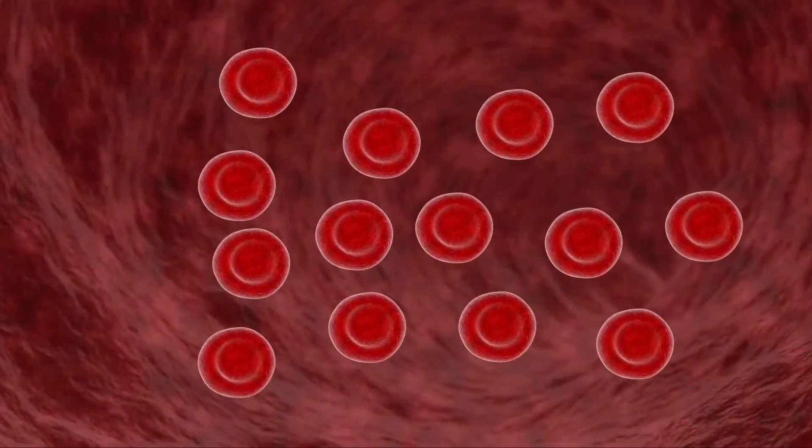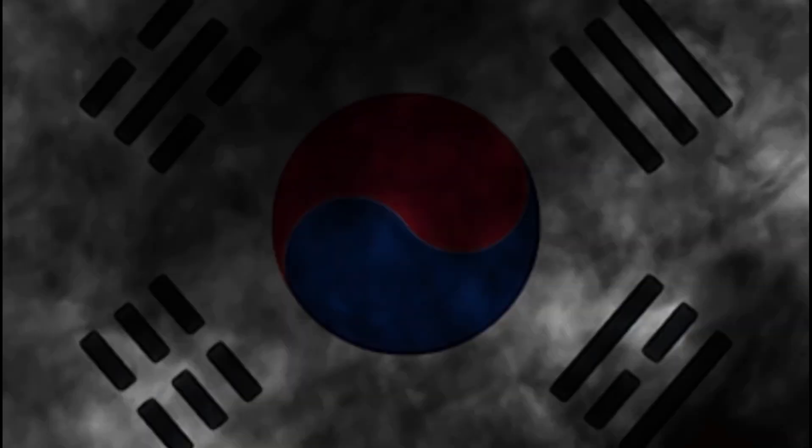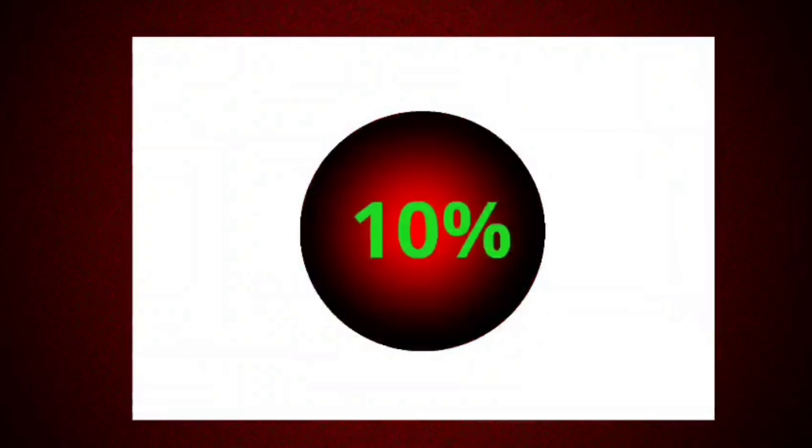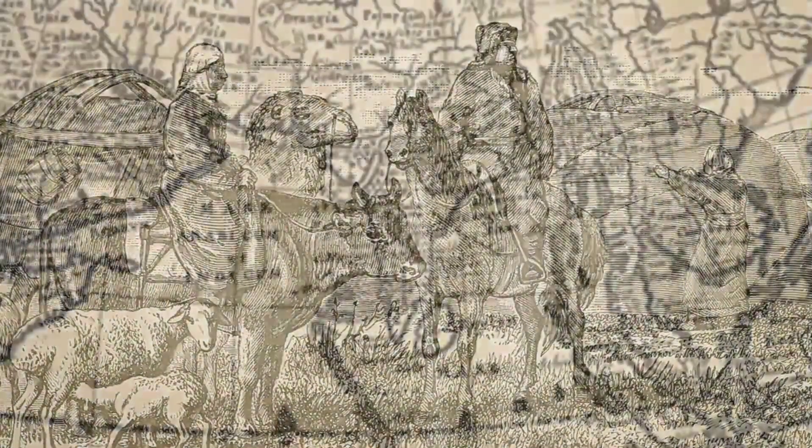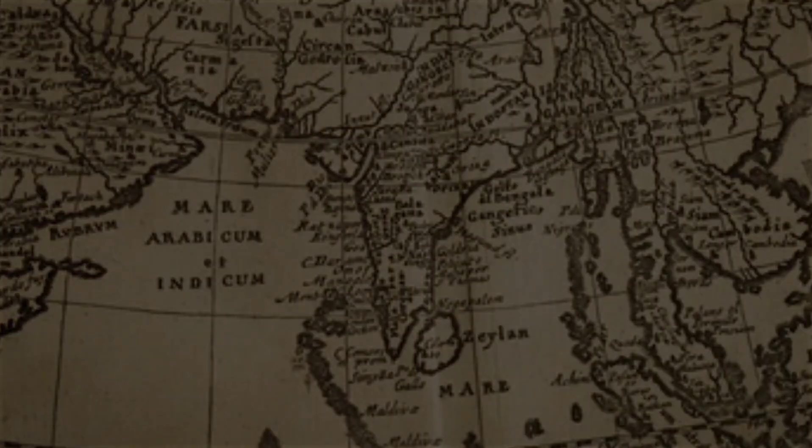Fact 4. AB blood is more common in some parts of the world. While it's rare globally, it's slightly more common in places like Korea, Japan, and some parts of Central Asia. In Korea and Japan, around 10% of people have AB blood. This might be due to historical migration and genetics. In contrast, it's very rare in South America and parts of Africa.